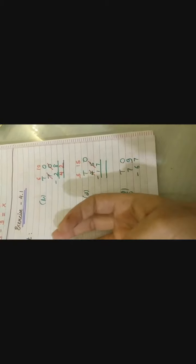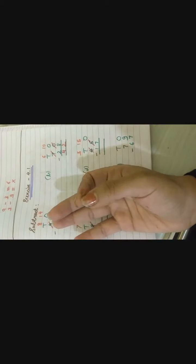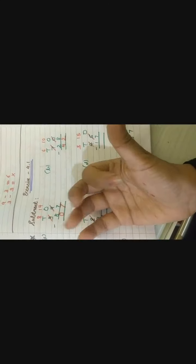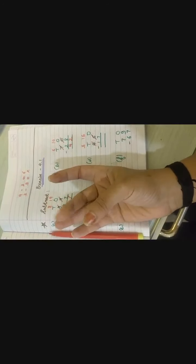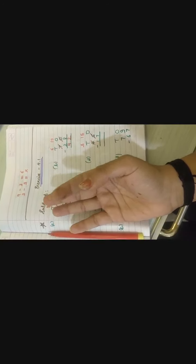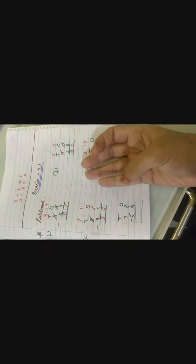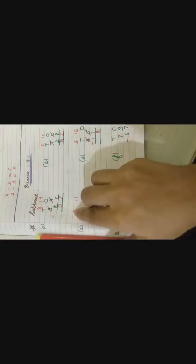Counting 1 to 15. Yeh poore 15 hai. Now we have to deduct 7. Removing 7, left with 8. We are left with 8. And 3 minus 1. 3 me se 1 hatana hai kitna bachega? 1 and 2. Good.